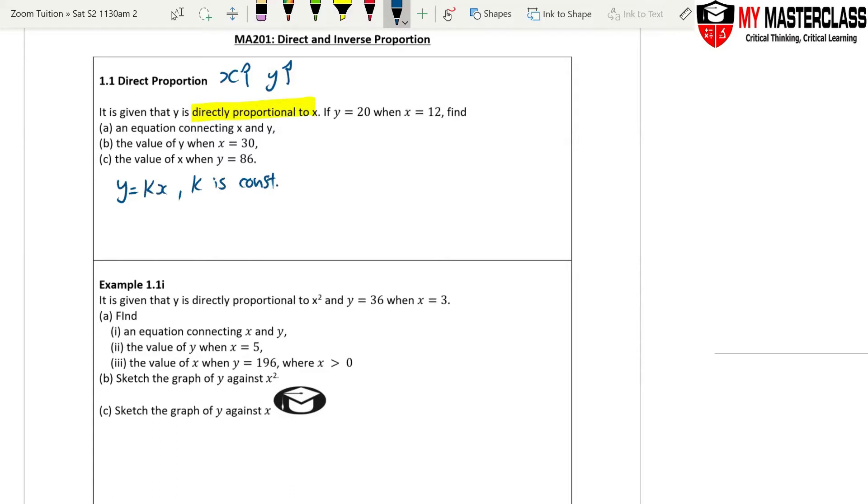Your job is always to find the k first. So when y equals 20 and x equals 12, we write 20 equals k times 12. k equals 20 over 12, which is equals to 5 over 3. Alright.